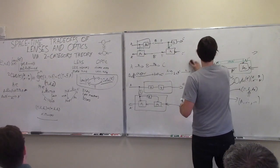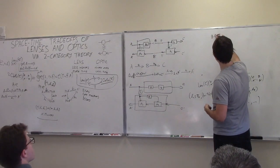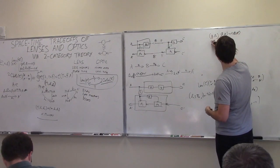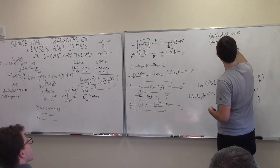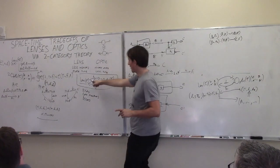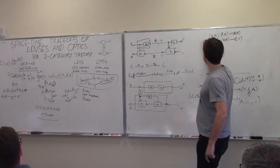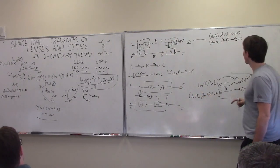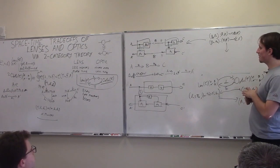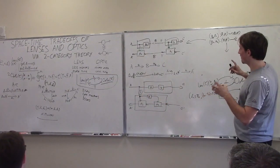If this were a strict functor, it would tell us: it doesn't matter whether we first turn these lenses into optics and compose them as optics, or first compose them as lenses and then turn the composite lens into an optic. Functor-iality would say these are the same. But now we have this lax structure — which is weak — that detects this different composition rule. So composing two lenses first versus turning them into optics first gives different results, but these different results are connected by a reparametrization two-cell.